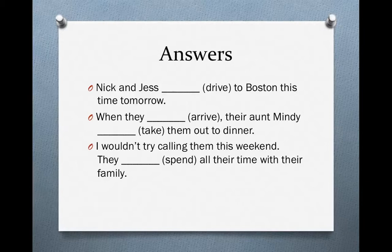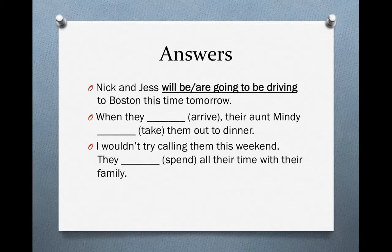Let's look at the answers. For the first one, Nick and Jess — we could say will be driving, or we could say are going to be driving. Why do we want to use the Future Progressive here? Because of the phrase this time tomorrow. We have a specific time, and because we have a specific time, we want to use the Future Progressive. Nick and Jess will be driving to Boston this time tomorrow.